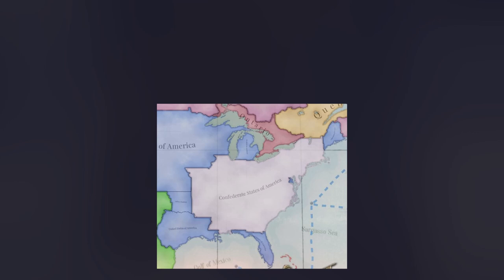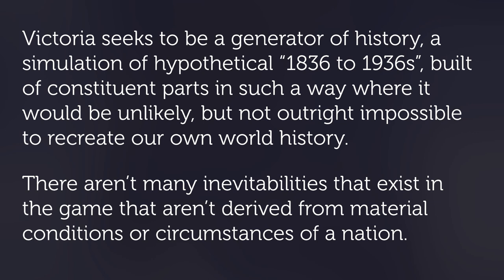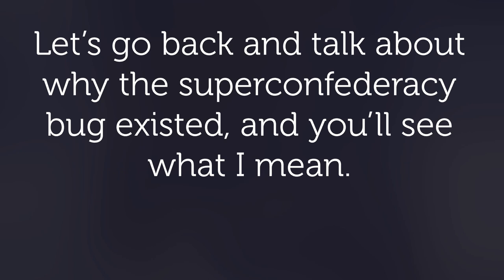Would the player notice a global financial crash as an event in their history without a text box declaring it so? As with real history, some things are rendered unremarkable unless one is looking for them and applying the right perspective and lens. It's seldom easy to declare an event significant while in the midst of it. This emergent history design has led to some interesting bugs — and you'll never hear me say this again — but a bug like the super confederacy is emblematic of a very strong design philosophy.